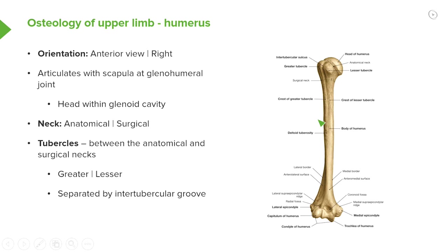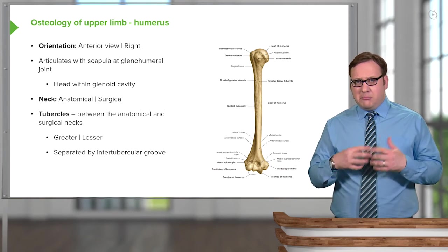This is the anterior view of a right humerus. Here we have the head of the humerus that will be articulating with the glenoid cavity, so the scapula would be positioned here. This is the lateral aspect of the humerus. I want to concentrate on this proximal region up towards the head of the humerus, which articulates within the glenoid cavity to form the glenohumeral joint — a really mobile joint.